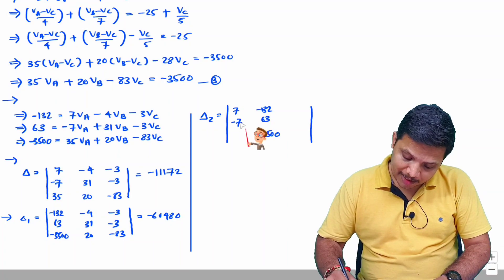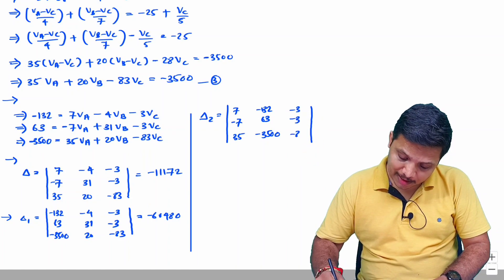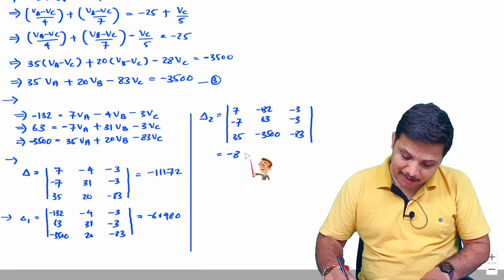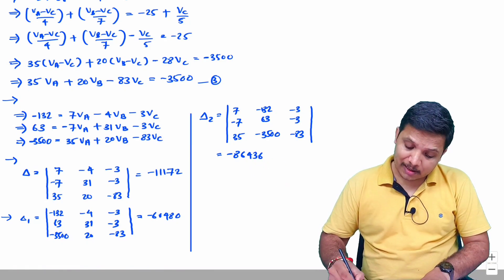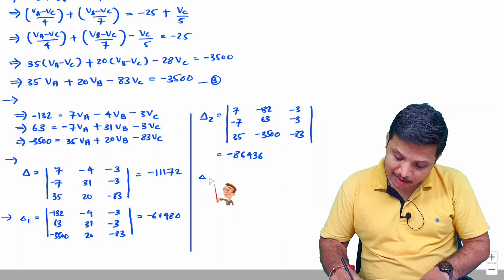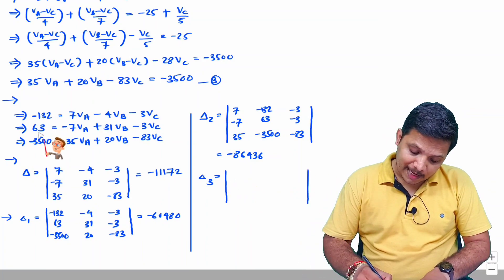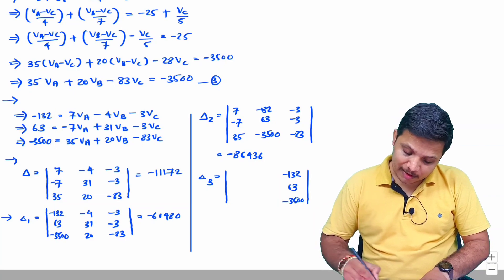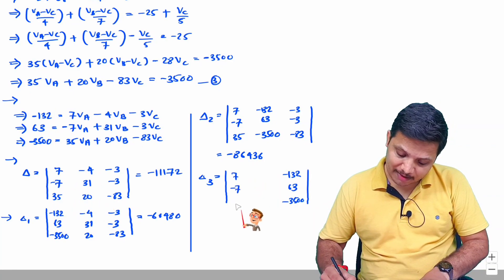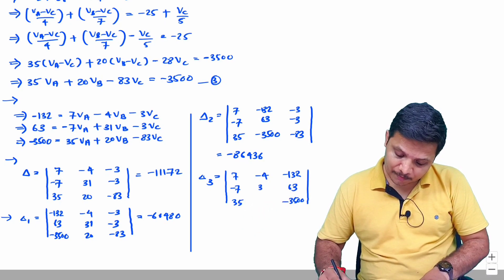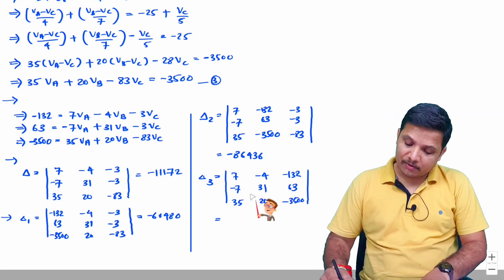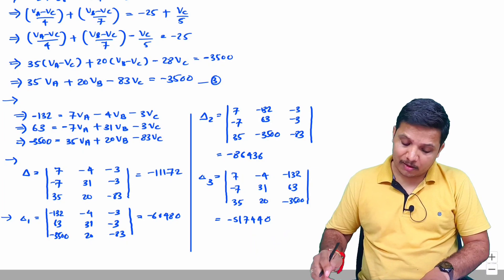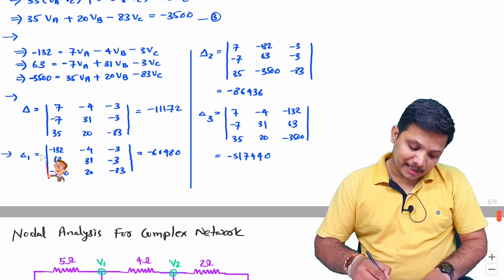Solving delta 2 gives minus 86436. For delta 3, the constants minus 132, 63, minus 3500 go in the third column, with first column 7, minus 7, 35 and second column minus 4, 31, 20. Solving gives delta 3 equals minus 51740. So now we have the values of delta, delta 1, delta 2, and delta 3.